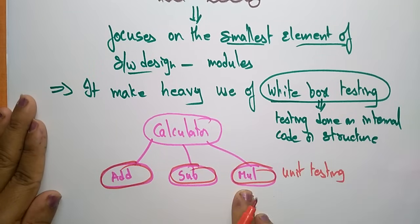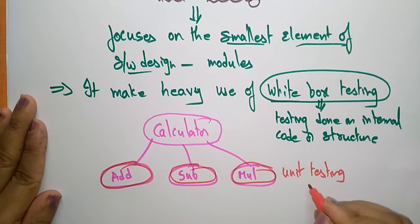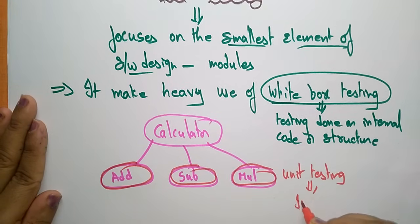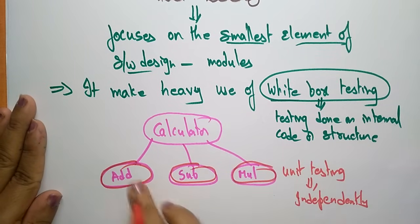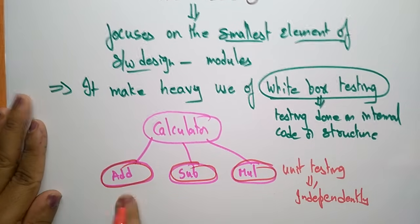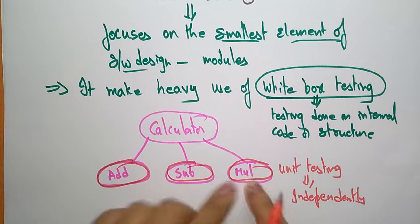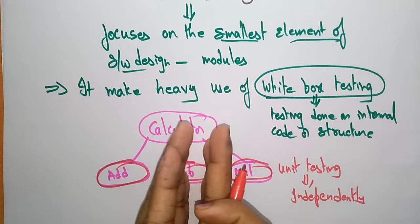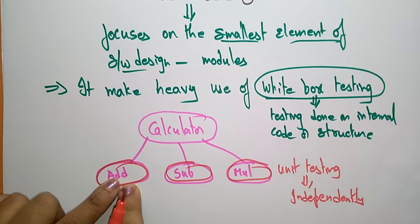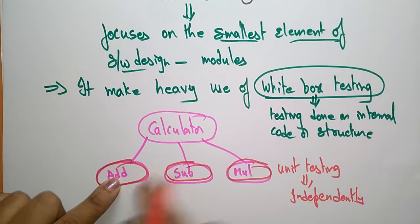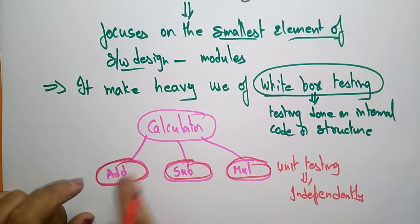These individual modules are tested independently — there is no dependency relation between the units. Addition is not dependent on subtraction, and subtraction is not dependent on multiplication. Every unit is tested independently, using the white box testing methodology, which tests the internal code.